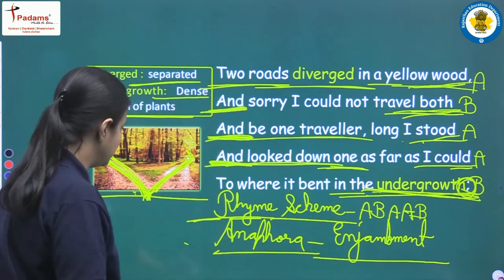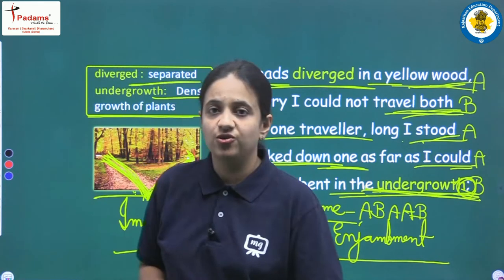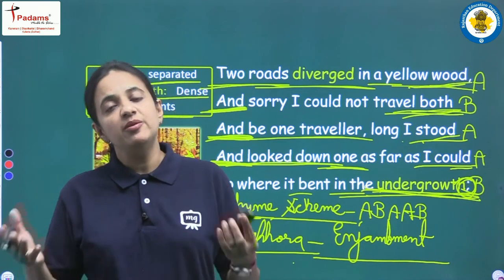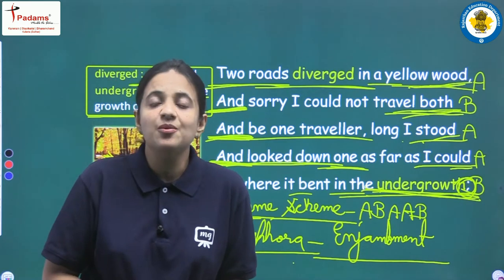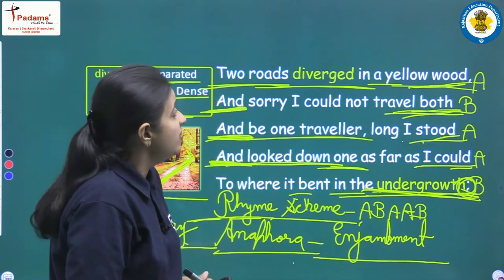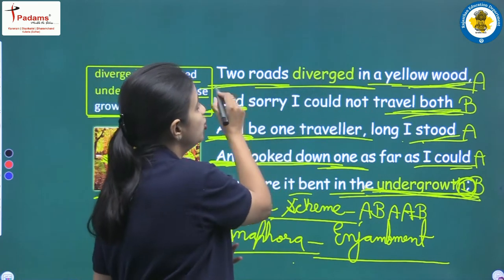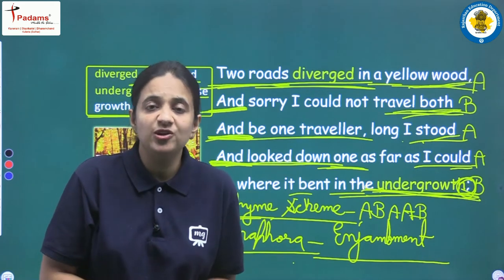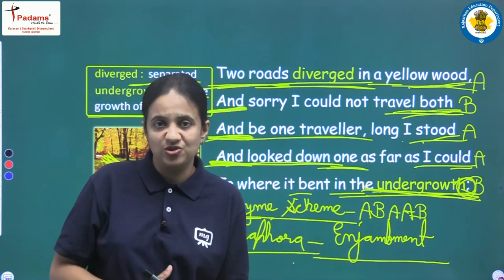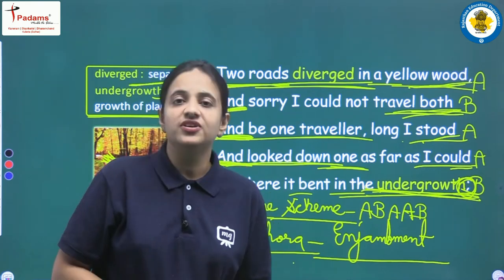One more literary device in this first stanza is imagery. Imagery is when the poet's words create a vivid image in our mind. After reading this stanza, we can visualize a yellow autumn forest with two roads separating from each other — we can clearly picture this scene in our minds. That is imagery.